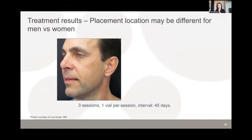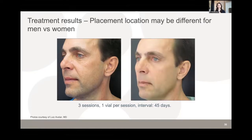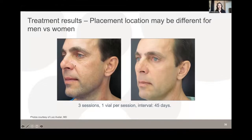Men are an increasingly important Sculptra demographic. Many male patients are hesitant about filler due to concerns about looking unnatural, but are receptive to Sculptra's message of naturally stimulating collagen. Placement matters for men — avoiding overly feminizing the face. Common treatment areas include the jawline, medial cheek for hollowness, and lifting the nasolabial fold, while avoiding accentuating the lateral cheek.